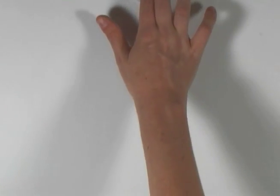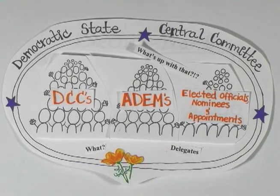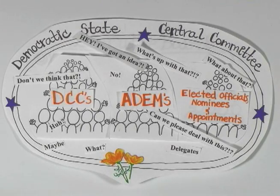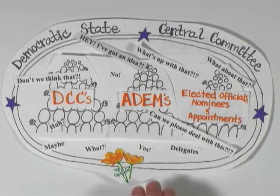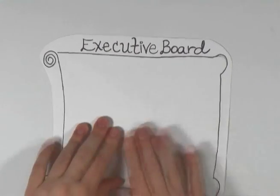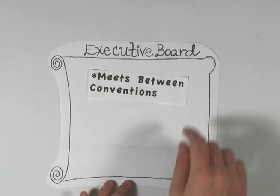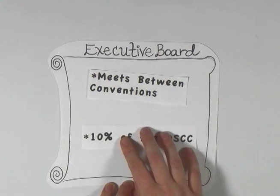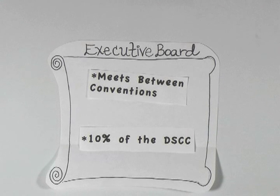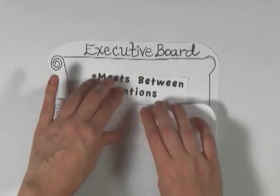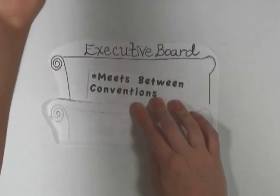On a day-to-day basis, most of the decisions are made by the party officers and party staff. However, the officers and staff can't make all the decisions about the state party, and it's impractical to bring the entire delegation together more than once a year. So there is also an executive board of the state party that meets a couple times a year, which is empowered to speak and make decisions on behalf of the entire state party delegation. The executive board, sometimes called the e-board, is made up of about 10% of the membership of the entire Democratic State Central Committee — that comes to about 300 people.